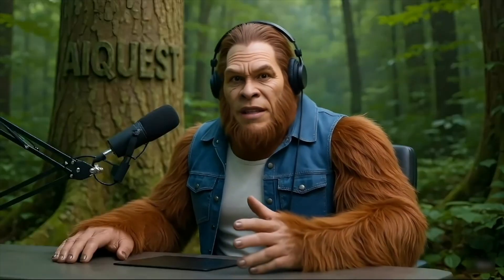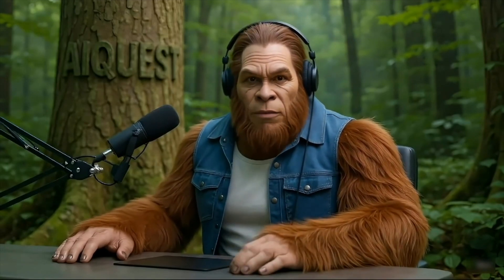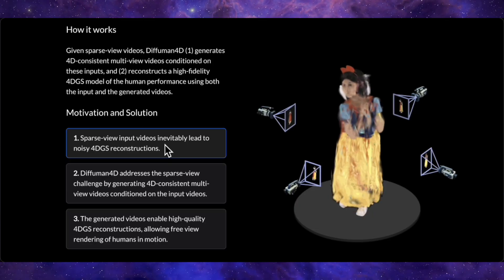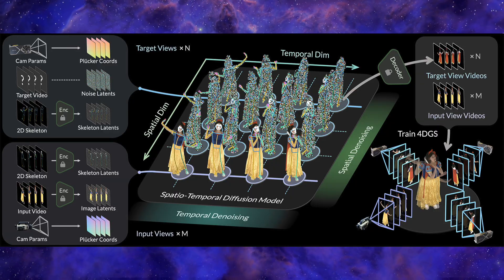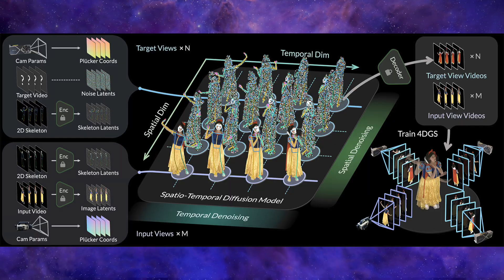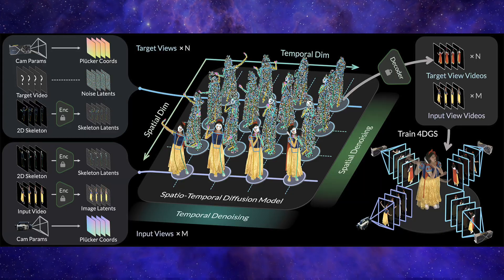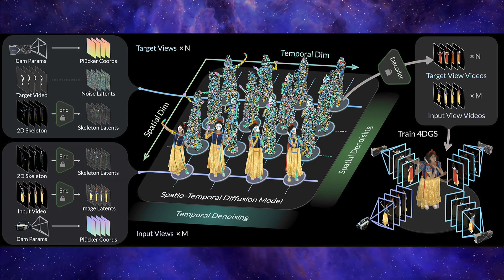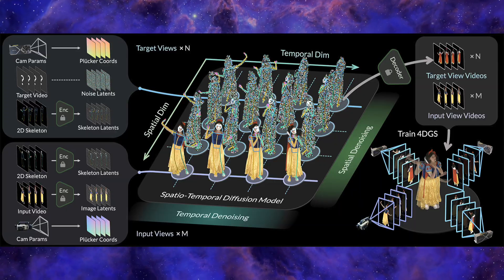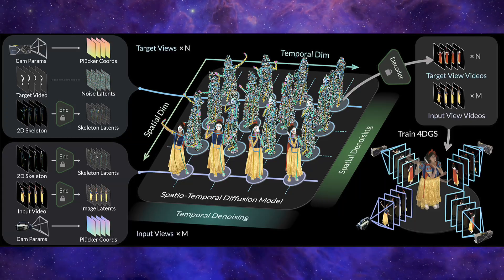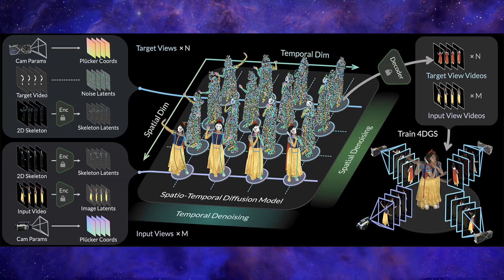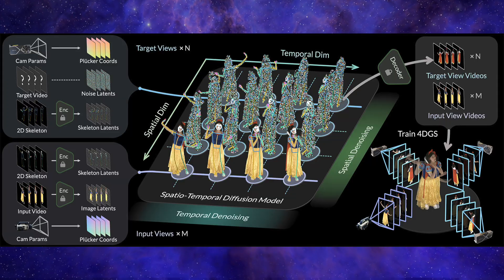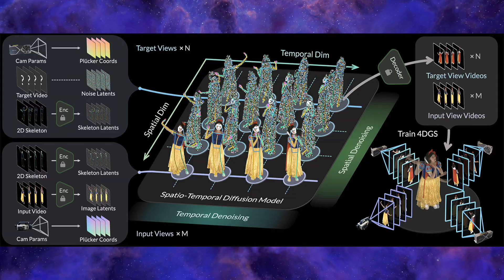Now for the big question: how does it actually work? This isn't just magic — it's the result of a very clever and deeply technical process. Previous methods struggled because generating new views independently produces nasty inconsistencies. DifHuman 4D solves this with a novel two-stage pipeline. First, it uses a powerful spatiotemporal diffusion model to generate a dense and consistent set of multi-view videos from the sparse inputs. The absolute key to its success is a technique called sliding iterative denoising — imagine working on a small section of a huge picture at a time, constantly checking the surrounding parts to make sure it all blends together. This sliding window operates in 4D, sliding not just across space from one camera view to the next, but also across time from one frame to the next, forcing every newly generated pixel to be consistent both spatially and temporally, eliminating those jarring artifacts seen in other models.